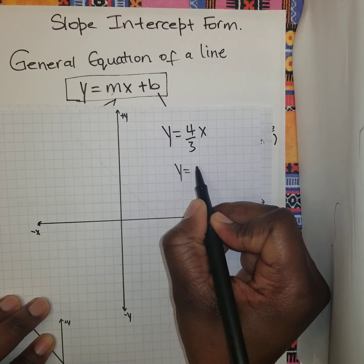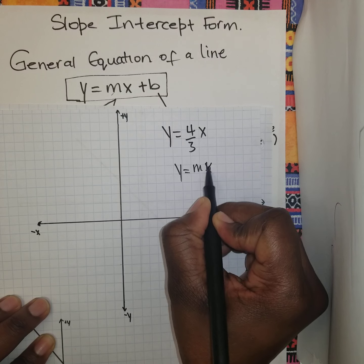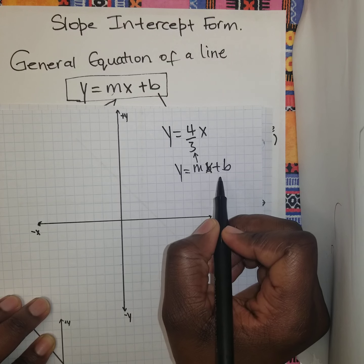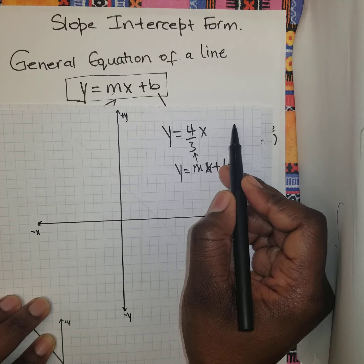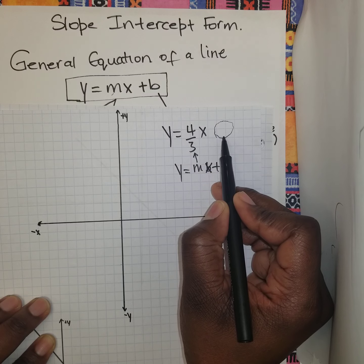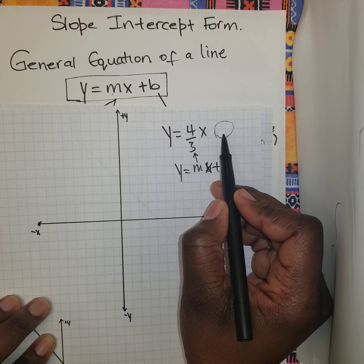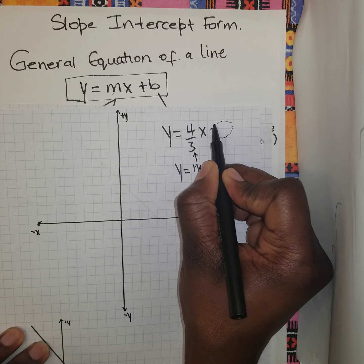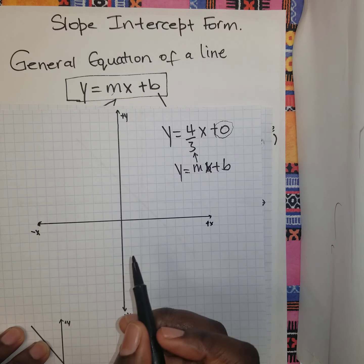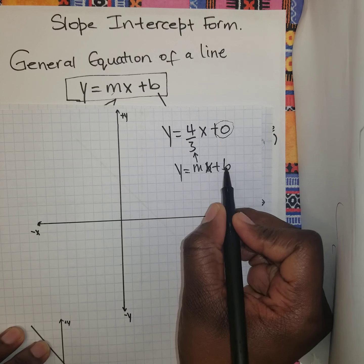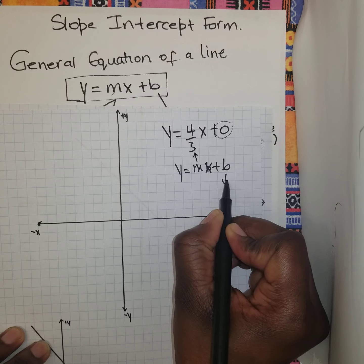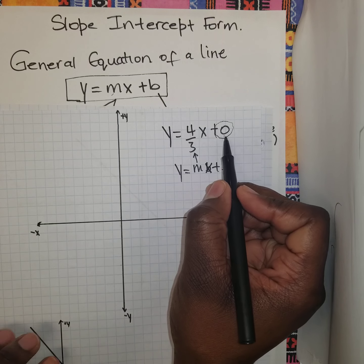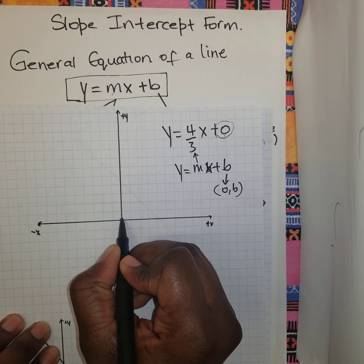We know the general form is y equals mx plus b. Here m represents 4 over 3, and x is independent. We are not given the y-intercept explicitly, but we know it's going to be 0. The coordinate for every y-intercept is 0 comma b, and since b is 0, it's going to be (0, 0), which is our origin.